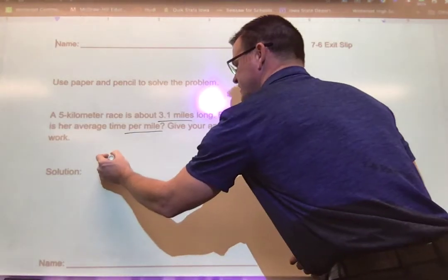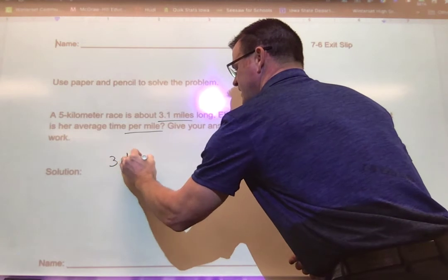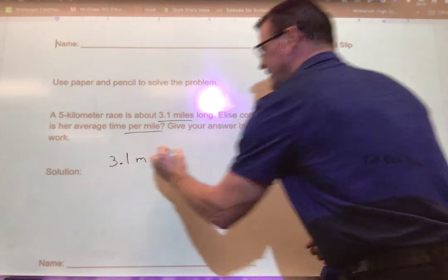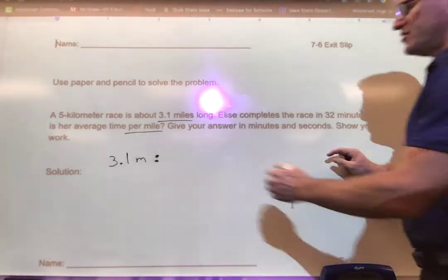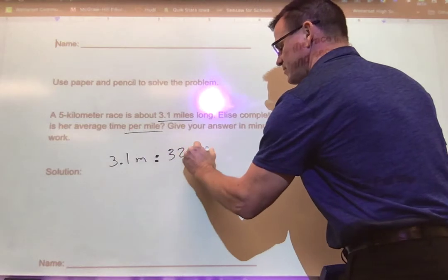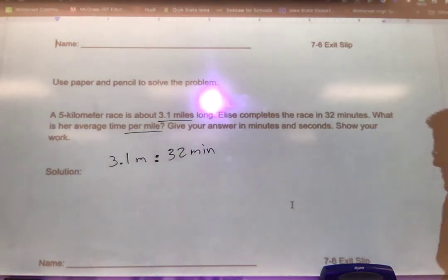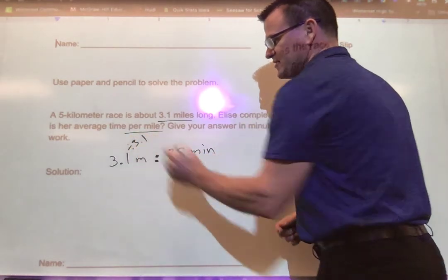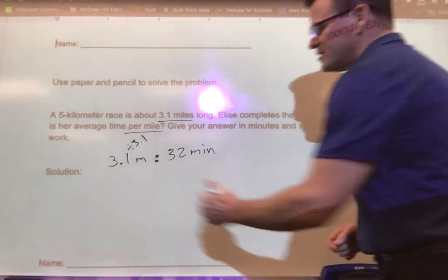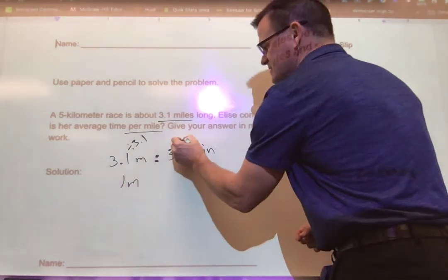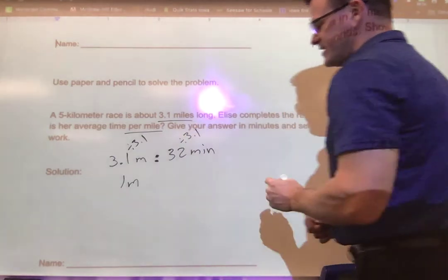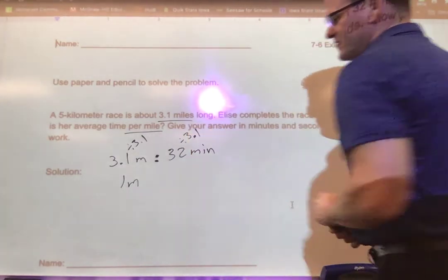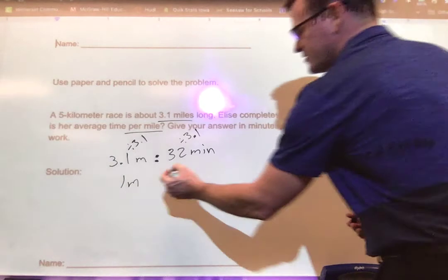She's doing in a ratio here 3.1 miles, let's put M for miles, and the rate is in 32 minutes. She's going 3.1 miles in 32 minutes. So per mile I got to get this down to one mile, and I know if I just divide this by 3.1 that gets it down to one mile, so I must divide this by 3.1 to break it down to per mile.